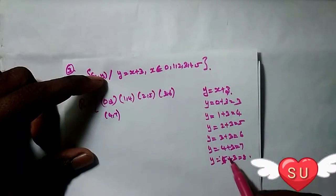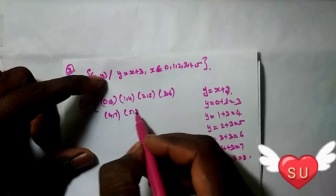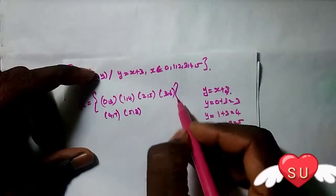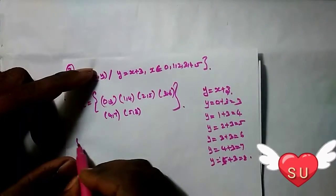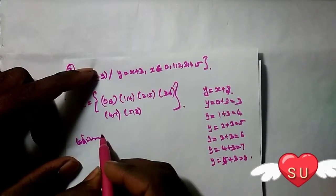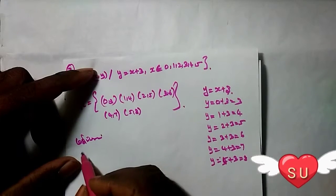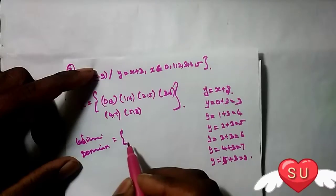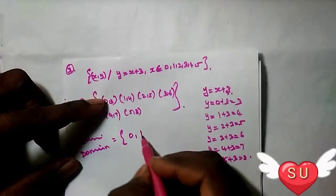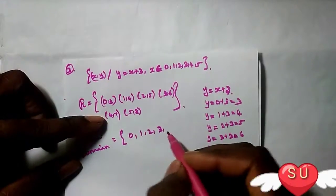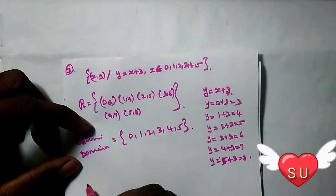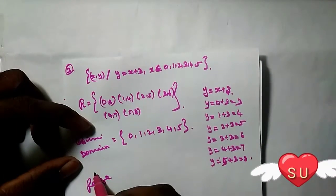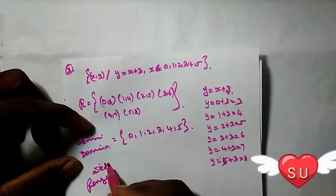So the domain is 0, 1, 2, 3, 4, 5. And the range is 3, 4, 5, 6, 7, 8.